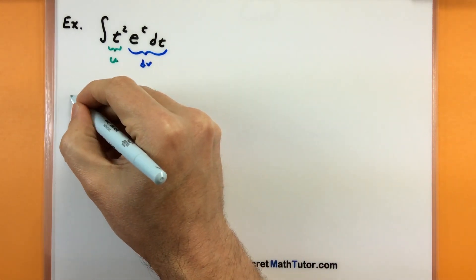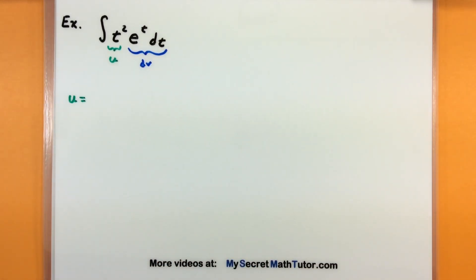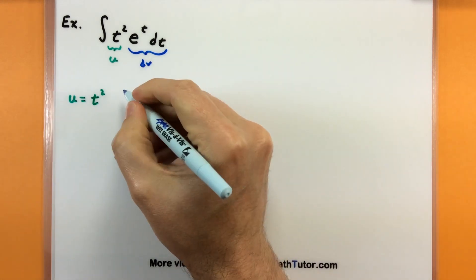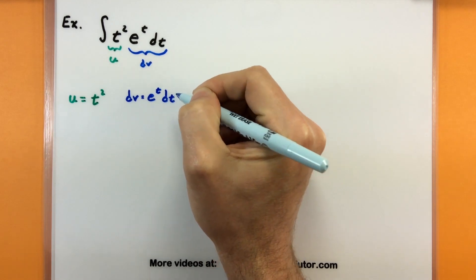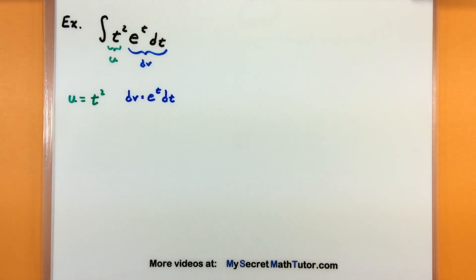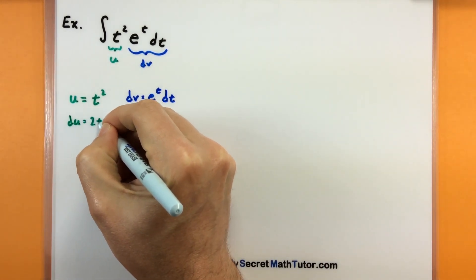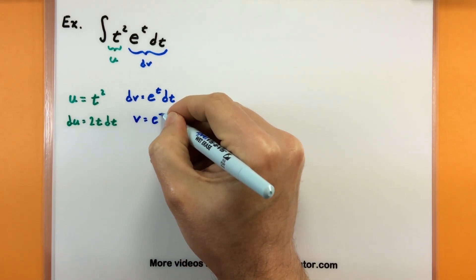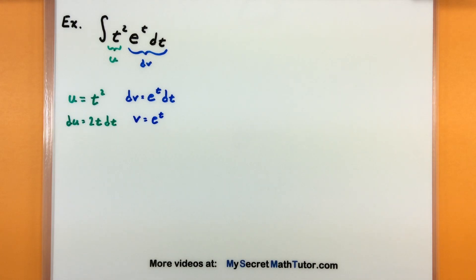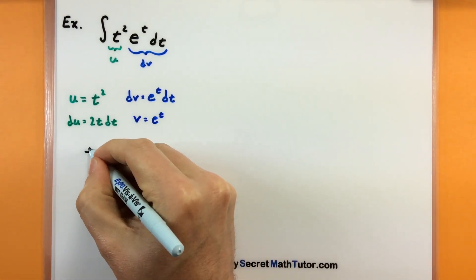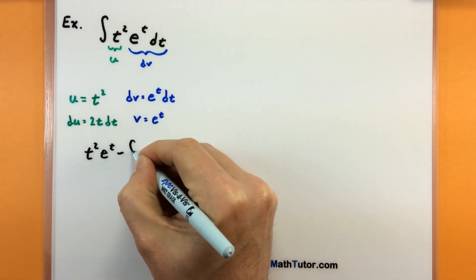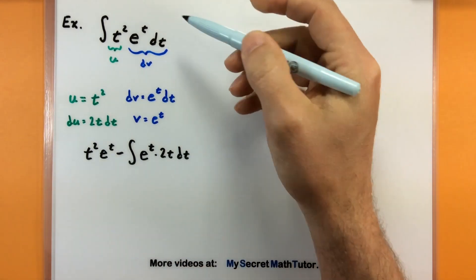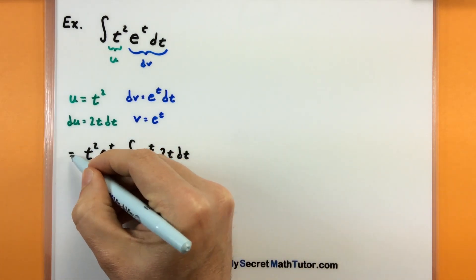Don't stress too much about exactly what you should choose for u and dv. If you choose the wrong thing and it gets more complicated, just go back and switch your choices. So: du equals 2t dt, and the antiderivative v equals e to the t. Now writing out the formula — ultraviolet: t squared times e to the t, minus snake voodoo: e to the t times 2t dt. We started with this integral and after integration by parts it's already looking a lot simpler. We've reduced t squared into just 2t. Pulling out the constant 2, it's already looking a lot better.